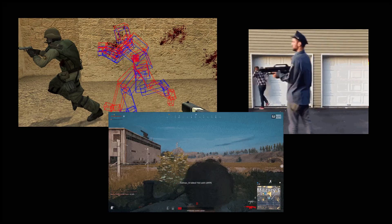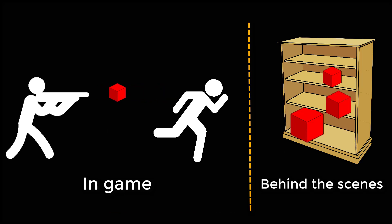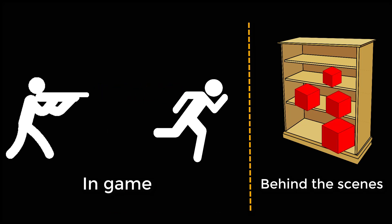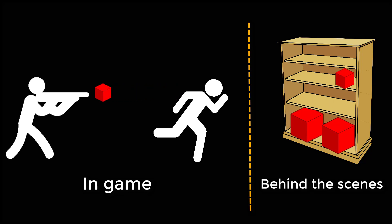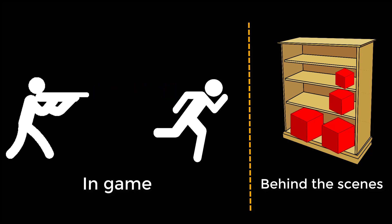Implementing object pooling in a project can virtually remove these types of lag spikes. It does this by simply turning off an unused game object and storing it for later use. In our code, when an object is no longer needed, we'll switch it off, add it to a list to keep track of it, and then turn it back on when it's needed again. This is something that nearly every game can make use of, and I'll be wrapping the object pooling functionality into a handy super unit for quick use and reuse.